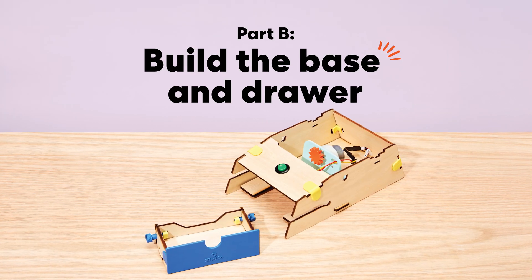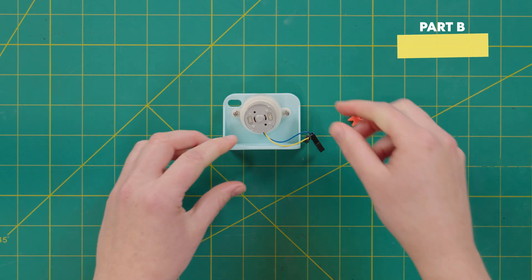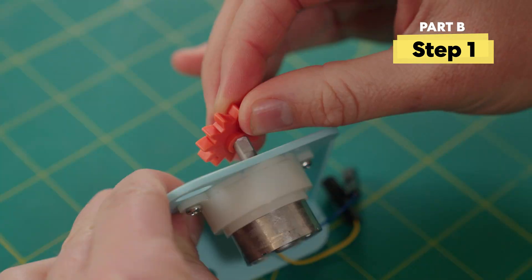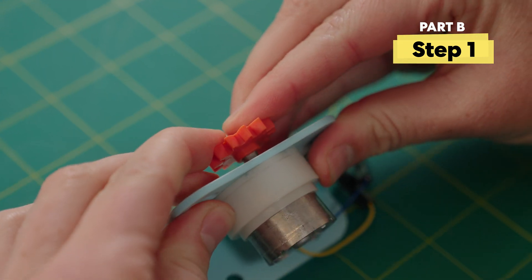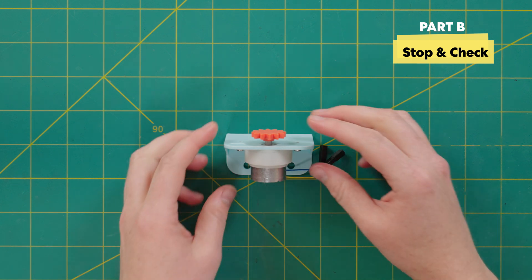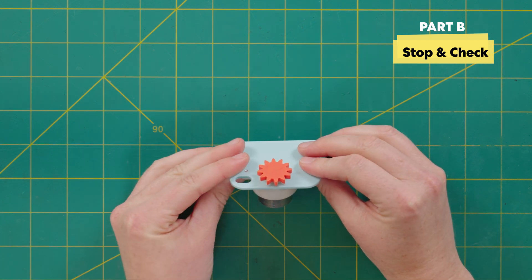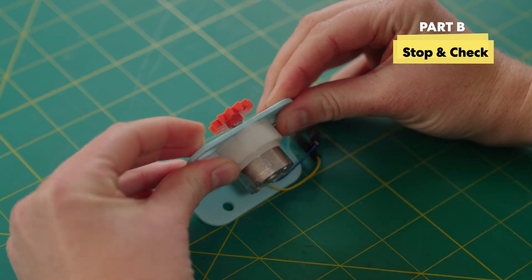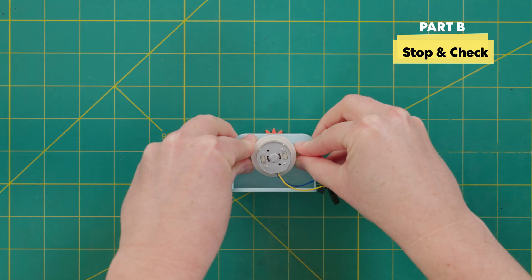Alright, let's move on to part B. You're going to build the base and the drawer. First, you're going to press the gear onto the motor. You may need to press down a little hard. Stop and check again. This part can be a little tricky. Let's make sure that orange gear is pressed all the way onto that motor. To double check, you can also flip it over and press it down onto a table.